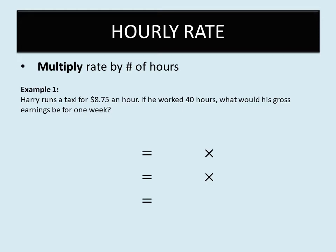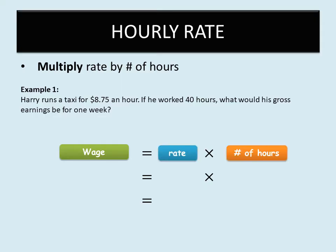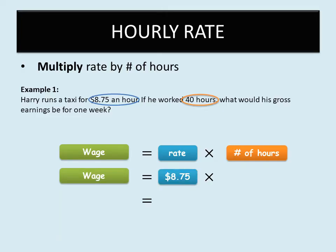To solve this problem we multiply the rate by the number of hours. To calculate the salary, which is the same thing as the wage, we multiply the rate by the number of hours. The rate is the amount of money he makes per hour, and the number of hours is 40. So multiplying $8.75 by 40 hours gives us a total of $350.